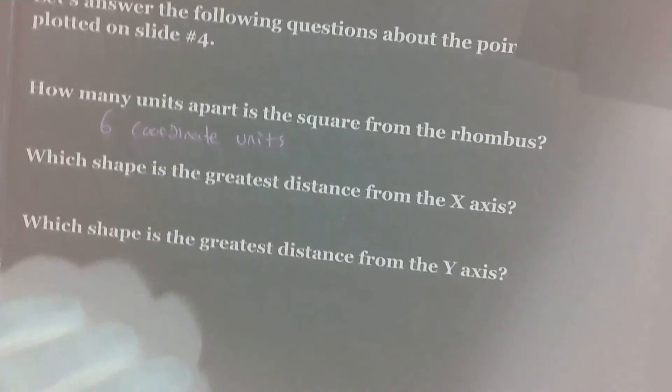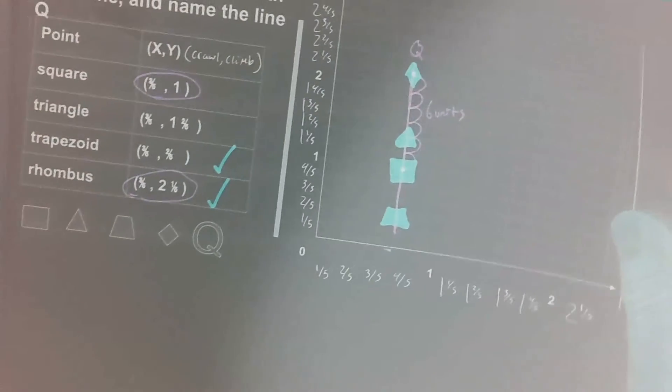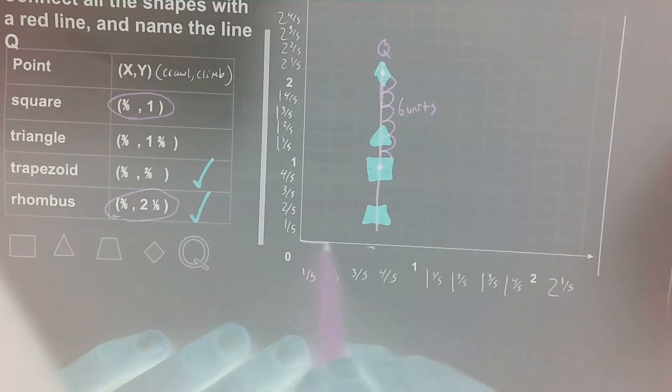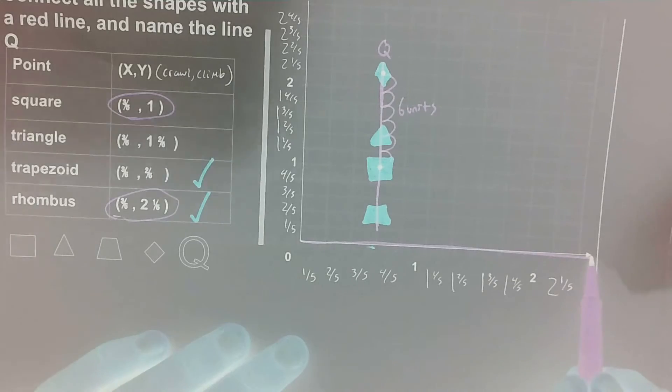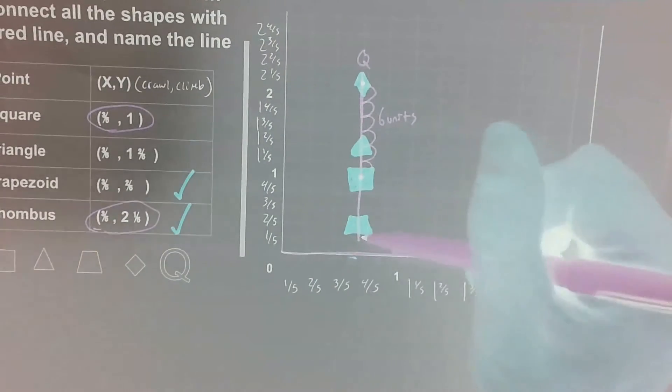Next, which shape is the greatest distance from the x-axis? So which shape is the farthest away from the x-axis? The x-axis is right here. And it's just going to be the furthest one away, which is our rhombus. The rhombus is one, two, three, four, five, six, seven, eight, nine, ten units away from.